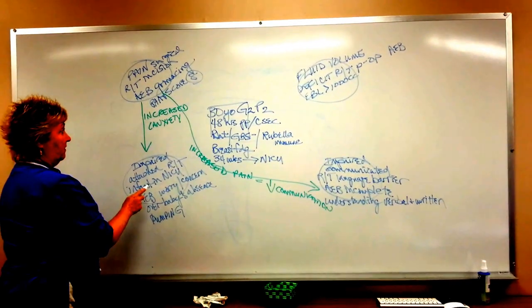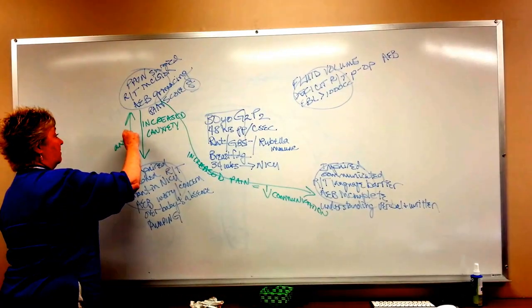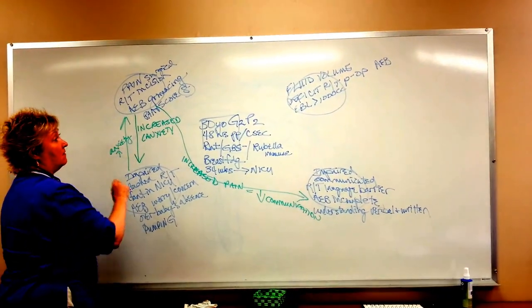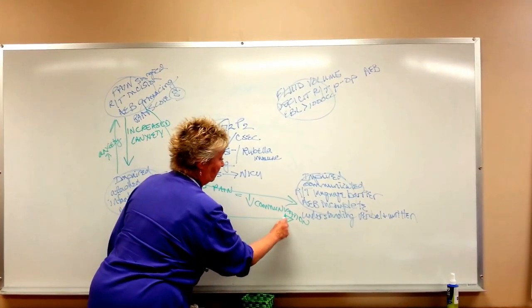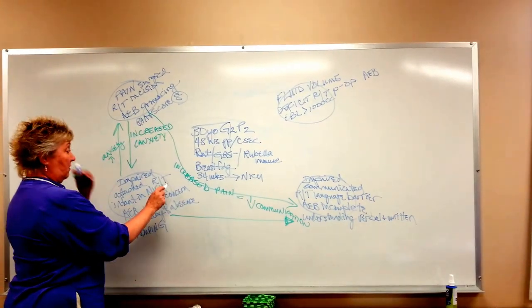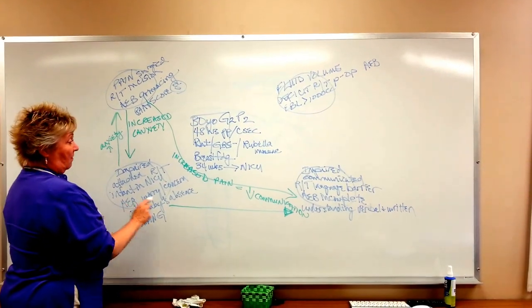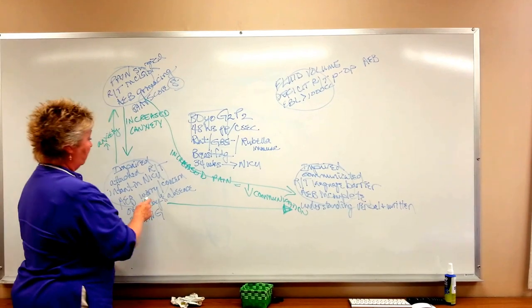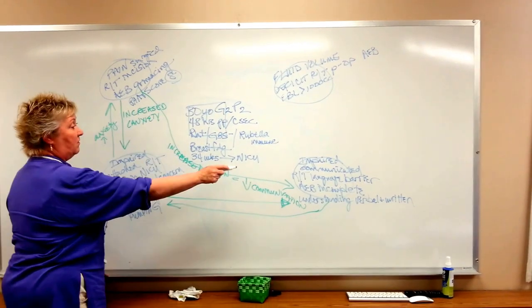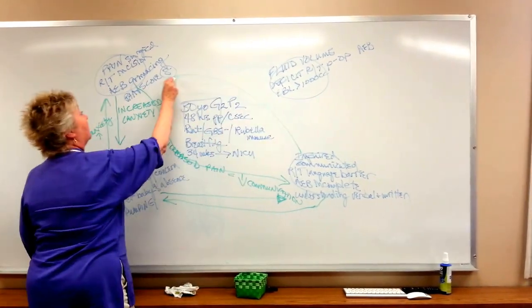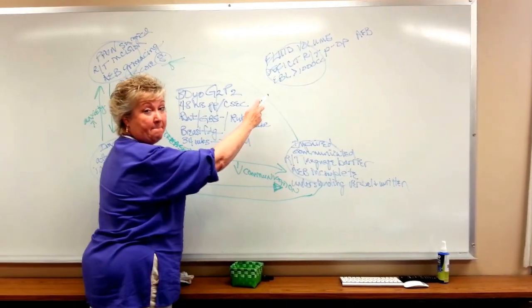Was her attachment difficulties related to her pain? Yes. The anxiety about this increased the pain. Was her attachment difficulties related to communication? Absolutely. She didn't understand what was going on with her baby. And was her attachment difficulties related to her bleeding? No. Was her impaired communication related to her attachment difficulties? Yes. And was her impaired communication related to her pain? Yes. Was her impaired communication related to bleeding? No.